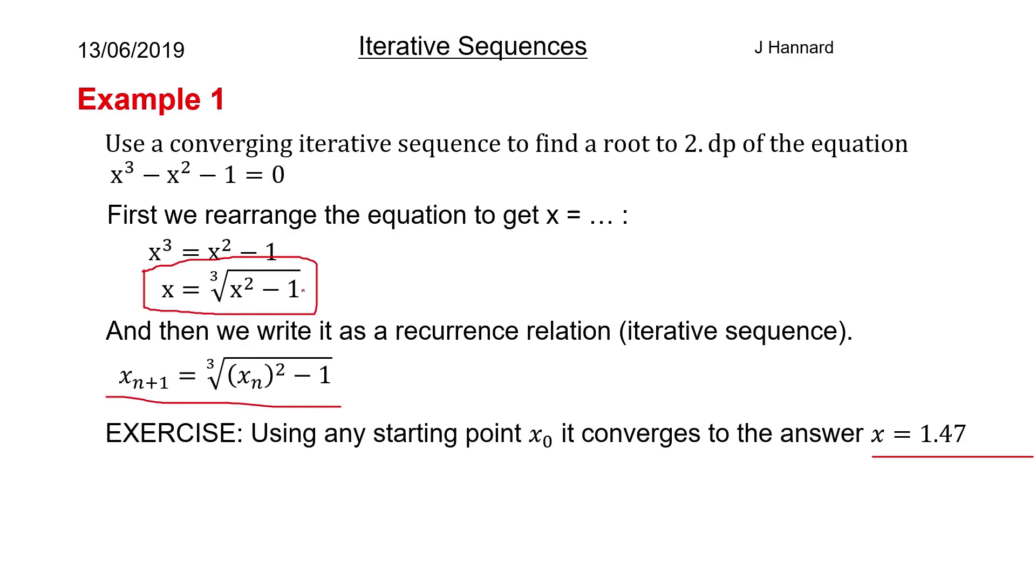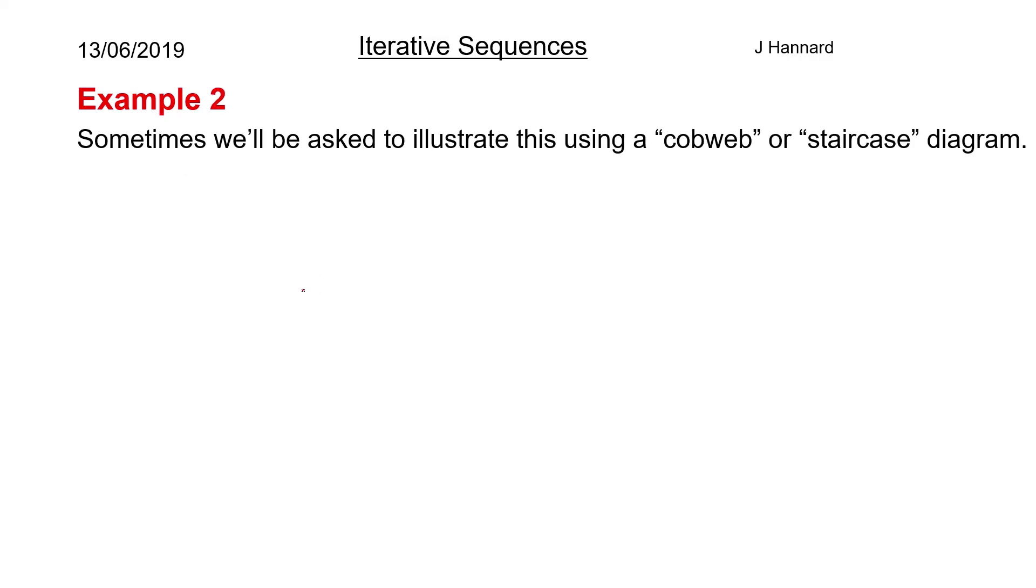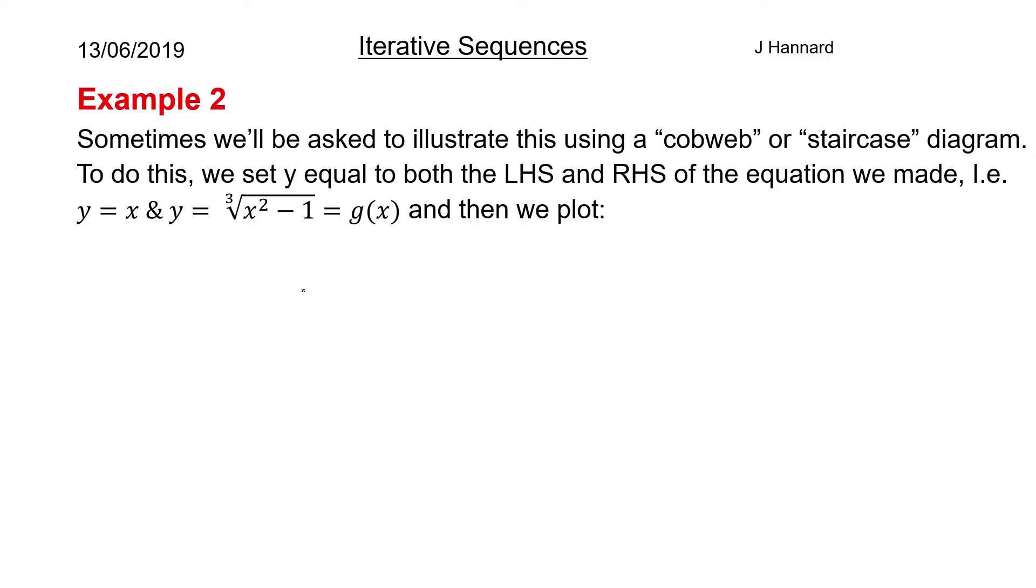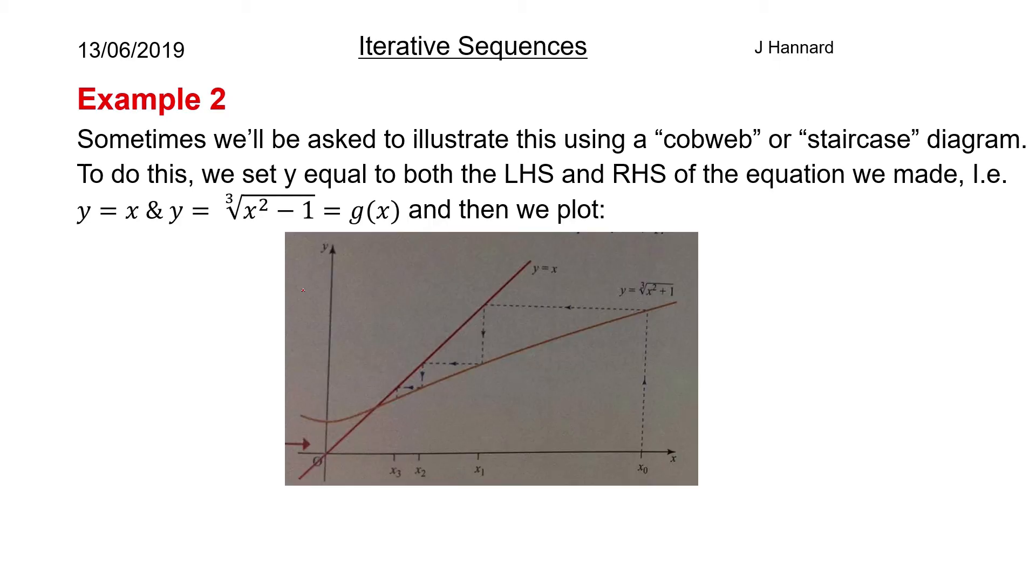Now we're not thinking about the iterative sequence. We're thinking about x equals the cube root of x² minus 1. So we set y equal to the left-hand side of that, i.e. y equals x. And we set y equal to the right-hand side of that, i.e. the cube root of x² minus 1. And we're going to also call that g(x), just because I can't be bothered to write that every time. So you set y equal to the left-hand side and y equal to the right-hand side, and then we plot.